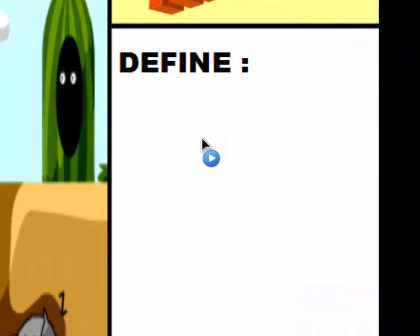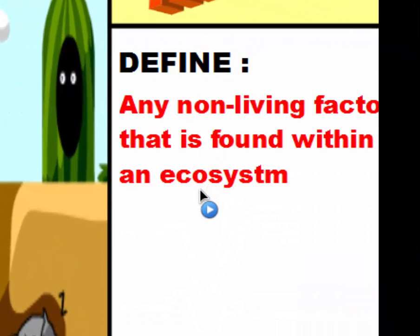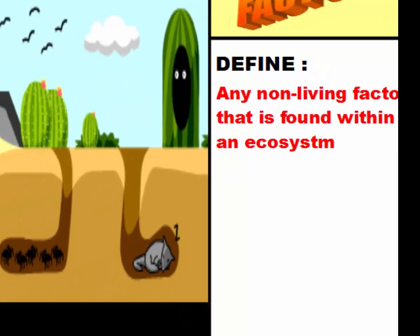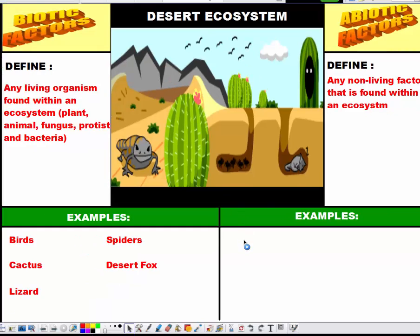By definition, an abiotic factor is any non-living factor found within the ecosystem — the opposite of biotic factors. Examples include the sunlight coming from the sun, the air surrounding the animals because the atmosphere touches the ground, the sand and soil found within the area, the rock seen in the mountains, and water found up in the clouds or in bodies of water such as rivers, lakes, and ponds in a different ecosystem.